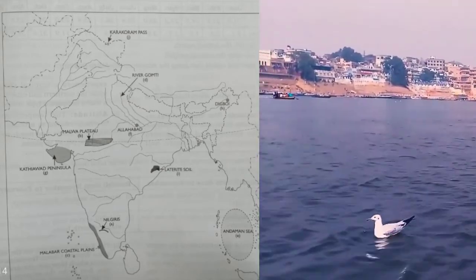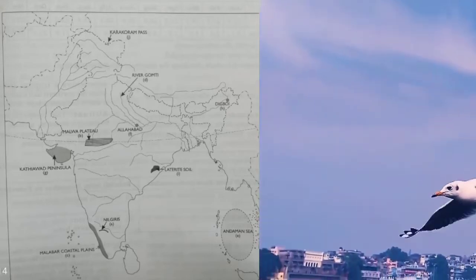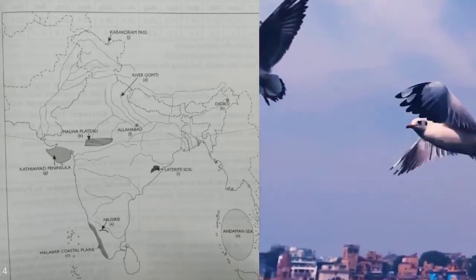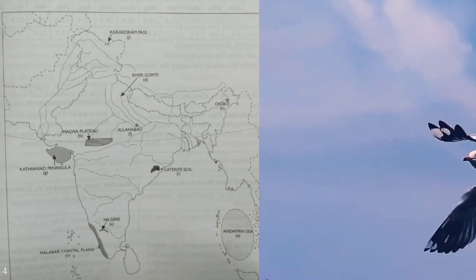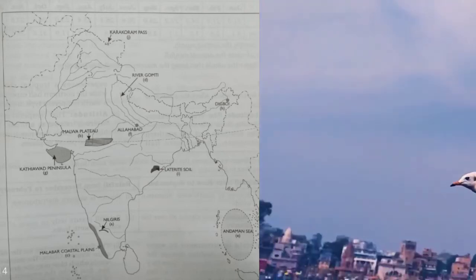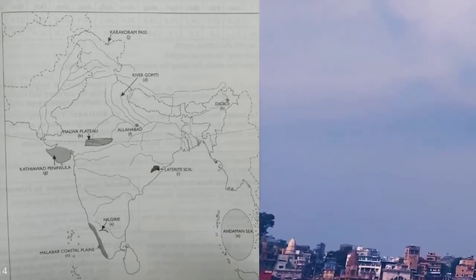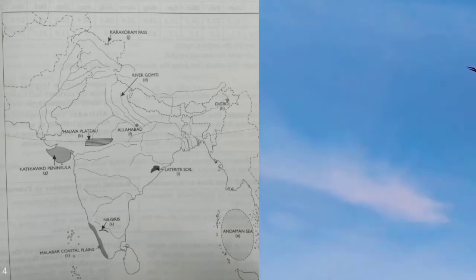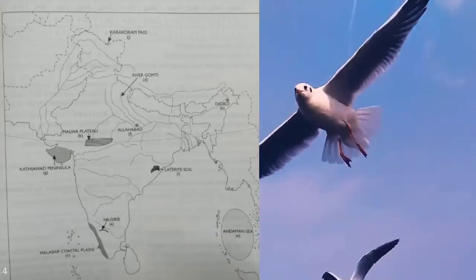Next outline map: 'A' — mark and name the Nilgiri Hills. 'B' — label the Malwa Plateau. 'C' — label the Malabar coastal sea. 'D' — mark and name the river Gomti. 'E' — mark and name the Andaman Sea. 'F' — mark and name Alwar. 'G' — Kathiawar Peninsula. 'H' — mark the laterite soil area below the Tropic of Cancer. 'J' — mark and name the Karakoram Pass.